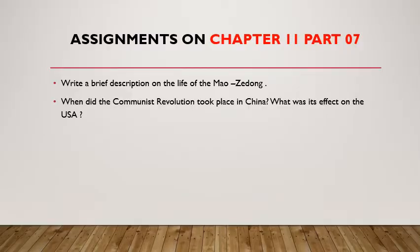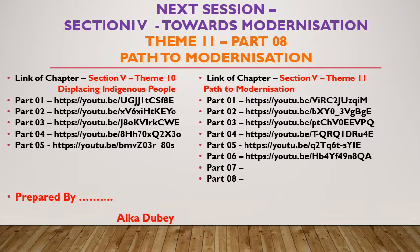Assignments to be done in Chapter 11, Part 7 are as follows. Number 1: Write a brief description of the life of Mao Zedong. Number 2: When did the communist revolution take place in China? What was its effect on the USA? Complete in your notebook. In the next session, Section 4, Towards Modernization, Theme 11, Part 8: Path to Modernization, we will continue.